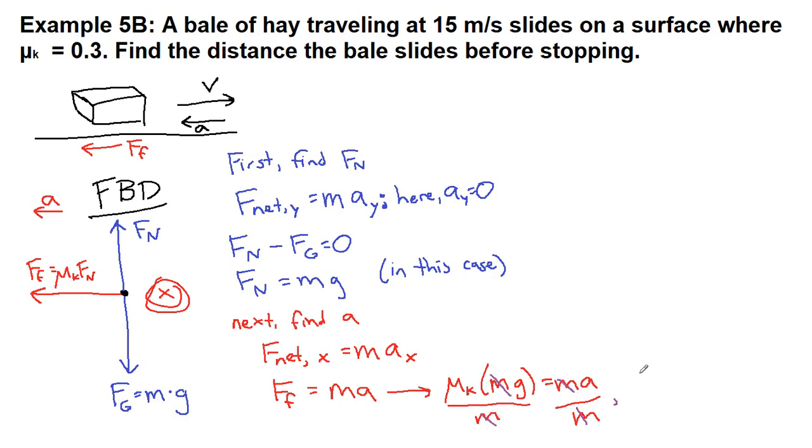And so our acceleration is mu k, which is 0.3 times gravity, which is 9.8. And that's going to be our acceleration, which means we get 2.94 meters per second squared.